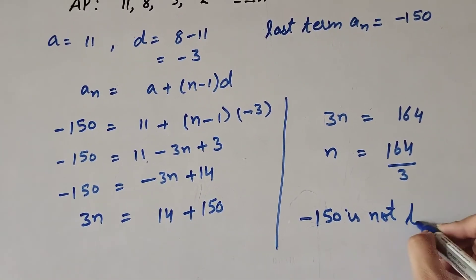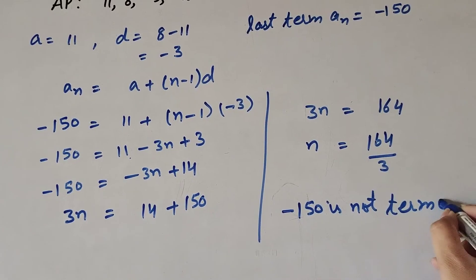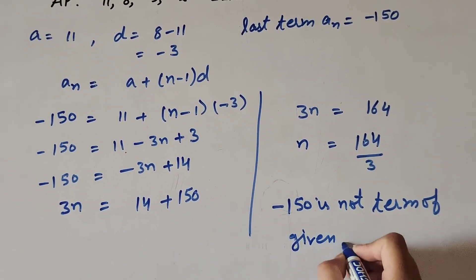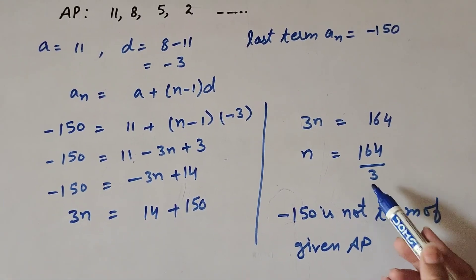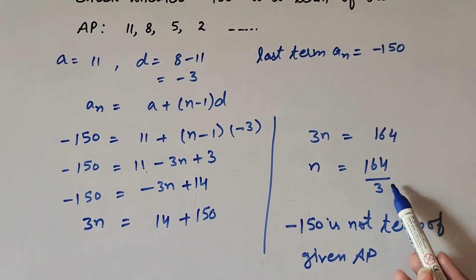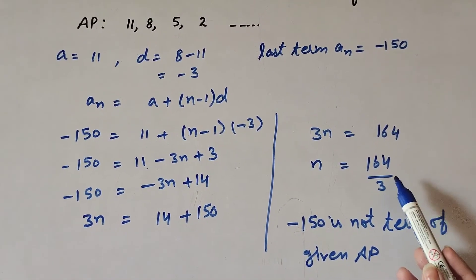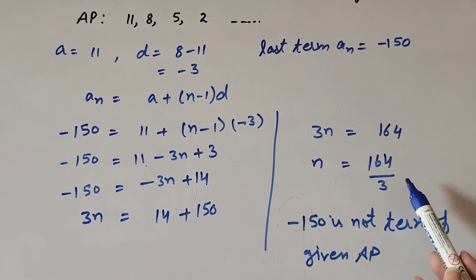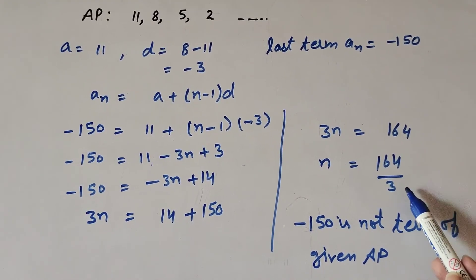-150 is not a term of the given AP because the total number of terms in any AP series is not fractional. It is always a natural number - it may be 10, 50, or 100, but it can never be a fraction.